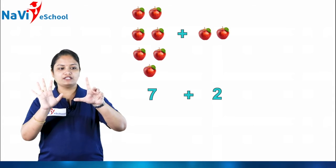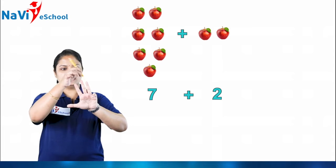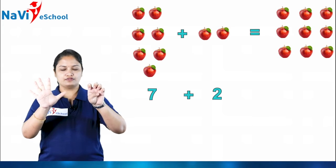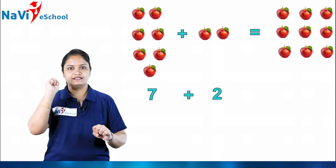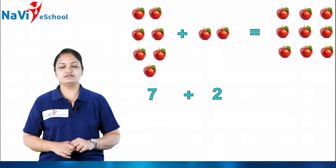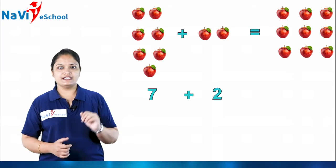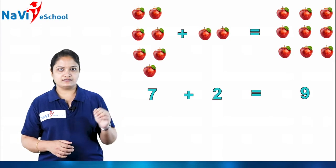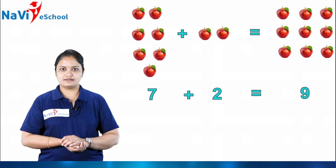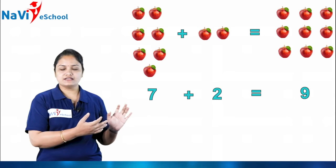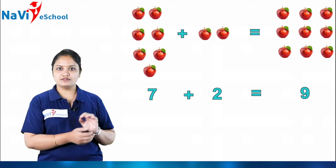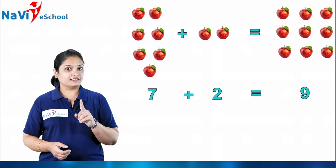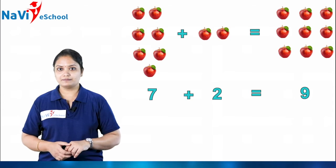I have seven apples here and two apples there. Together, how many do we have? One, two, three, four, five, six, seven, eight, nine — so totally we have nine apples. Draw nine apples over there, then write it in numbers like this: nine. So symbolically in mathematics, we write seven plus two is equal to nine.